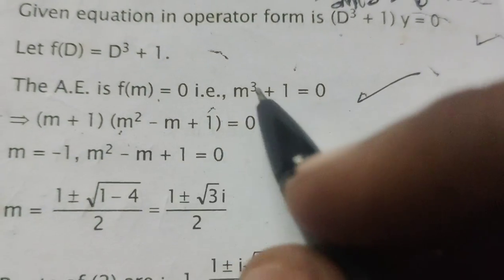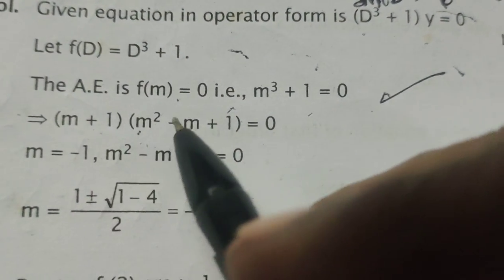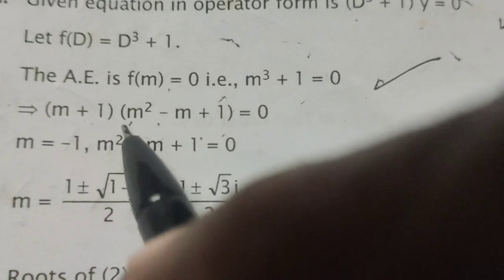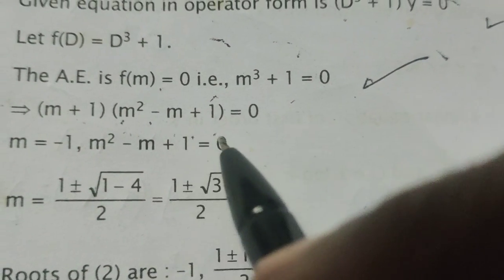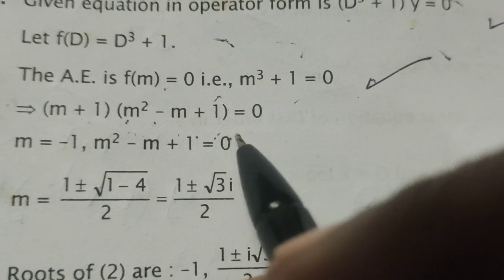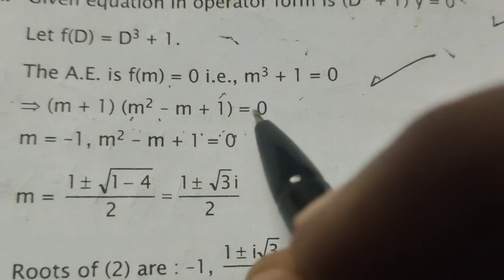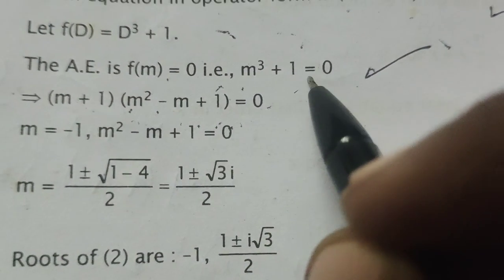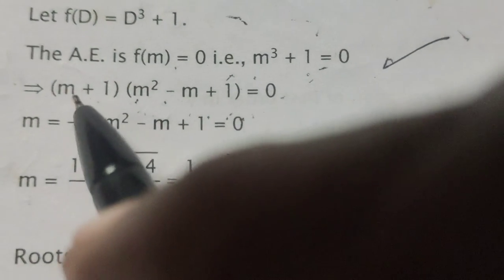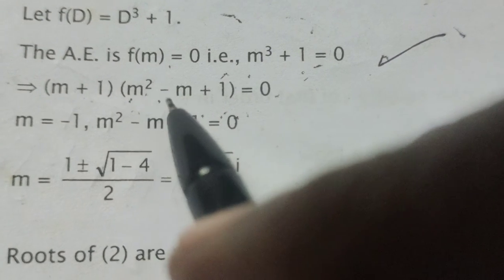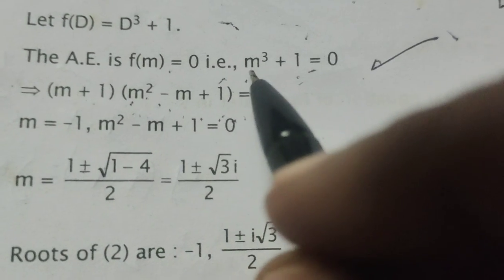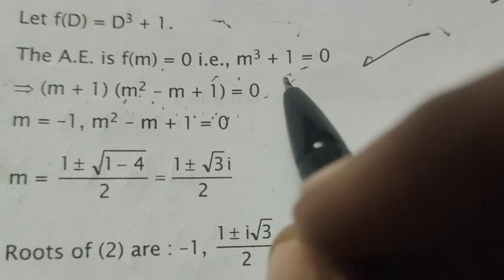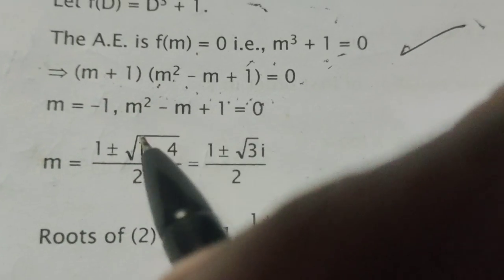Now, m³ + 1 can be written as (m + 1)(m² - m + 1), using the identity (a + b)(a² - ab + b²), where a = m and b = 1. So (m + 1)(m² - m + 1) = 0.